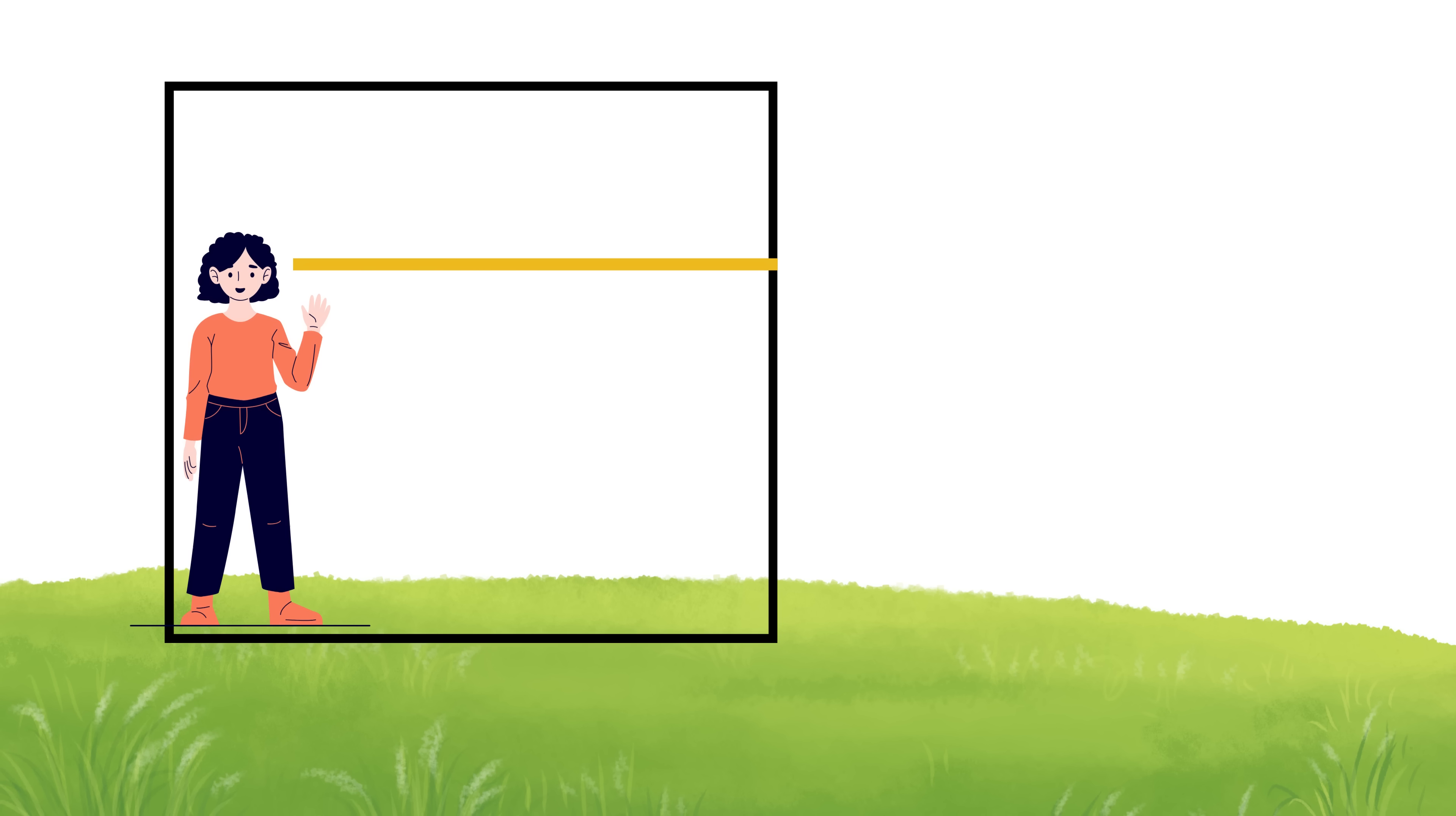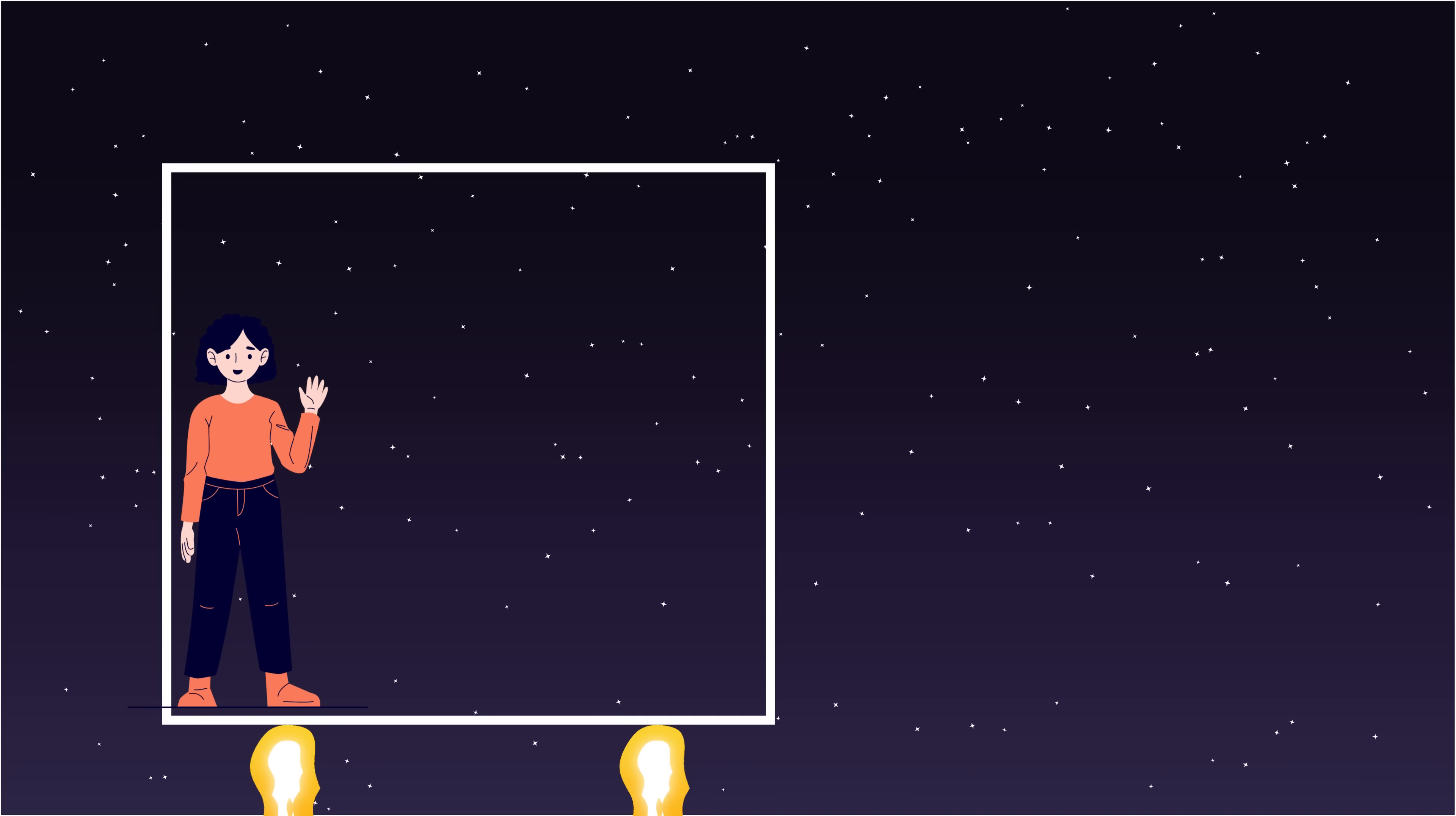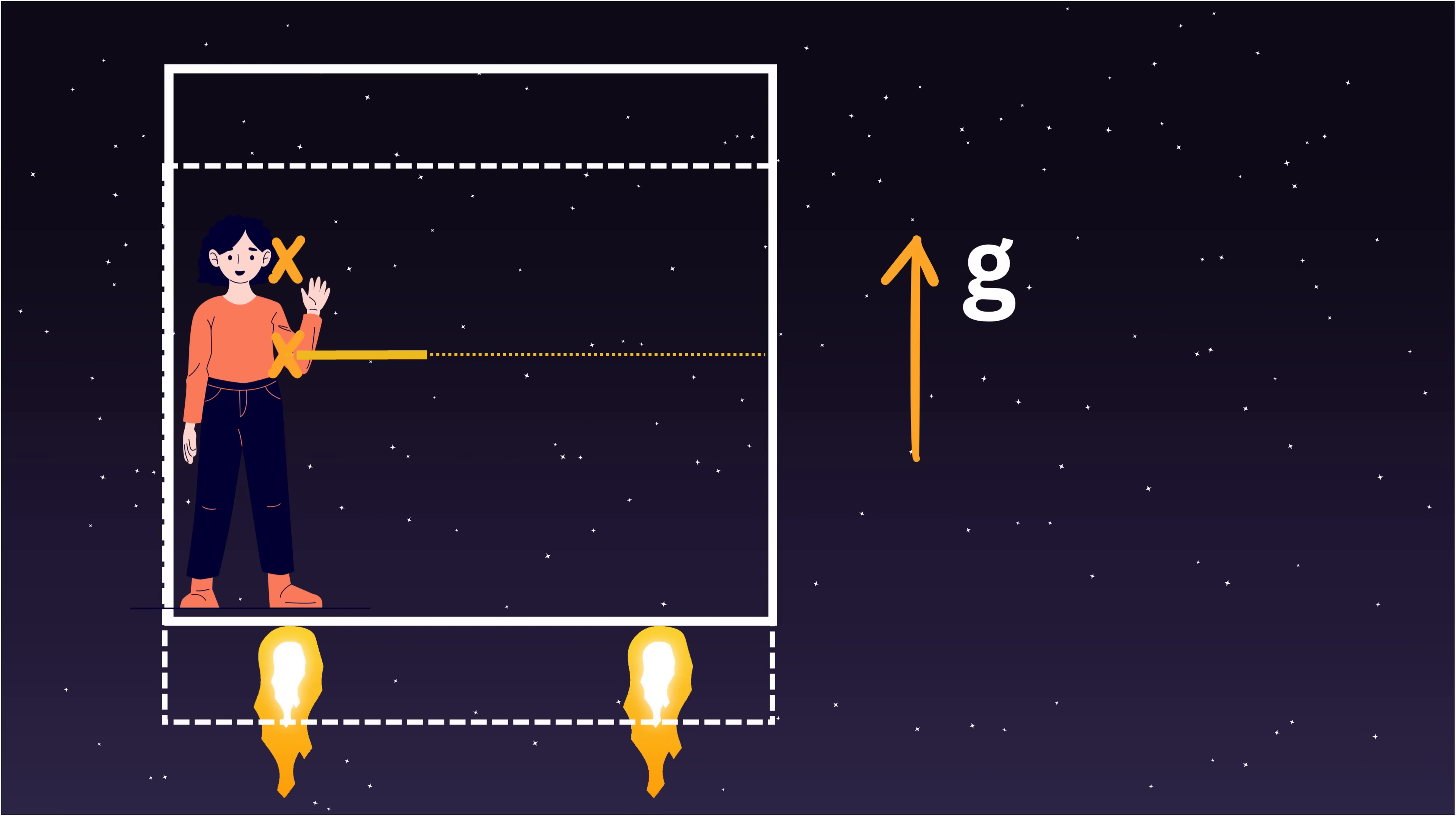Now imagine the same room again. But this time, it's inside that accelerating spaceship, moving upward with a constant acceleration of G. Now look at this part clearly. While the light is crossing the room, the floor is moving upward. So by the time the light reaches the other wall, it hits slightly lower than where it started.